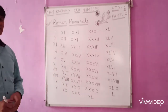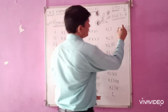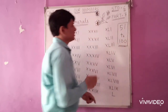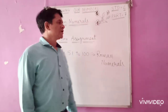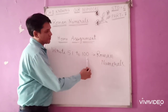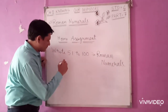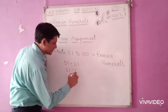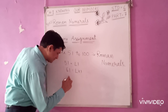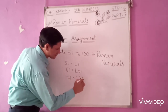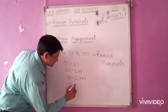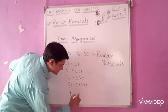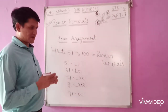Your home assignment will be to write numbers from 51 to 100 in Roman numerals. As hints: 51 is LI, 61 is LXI, 71 is LXXI, and 91 is XCI.